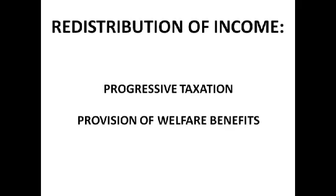With the redistribution of income, the government tends to use progressive taxation — essentially the Robin Hood effect, taking money from the rich and giving it to the poor. The big example is income tax: higher earners pay 40% or 45%, whereas poorer earners pay little or no tax. The government uses this money to provide welfare benefits so that poorer or unemployed people can afford food, clothing, and financial security. We also have child benefits and other benefits for ill people, all to ensure equity within the economy, since lack of equity is a major form of market failure.